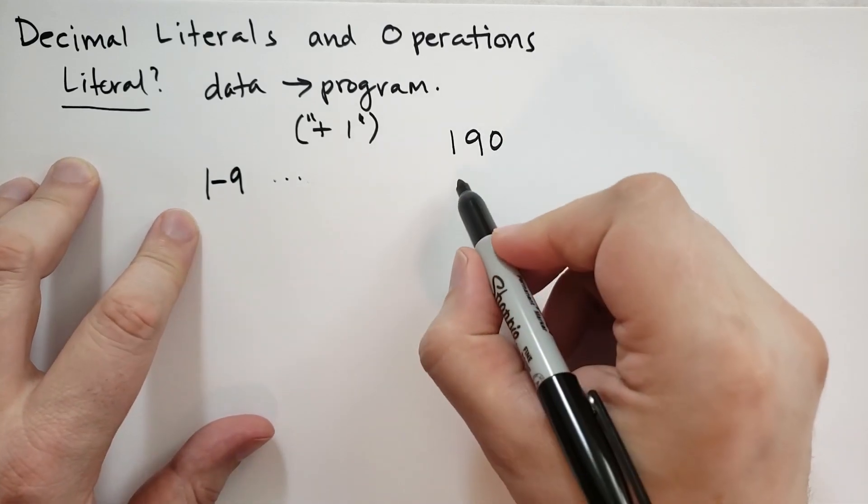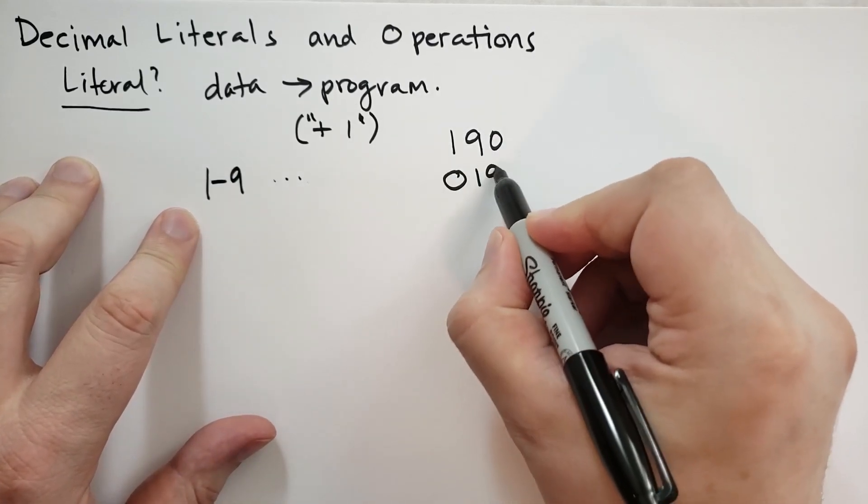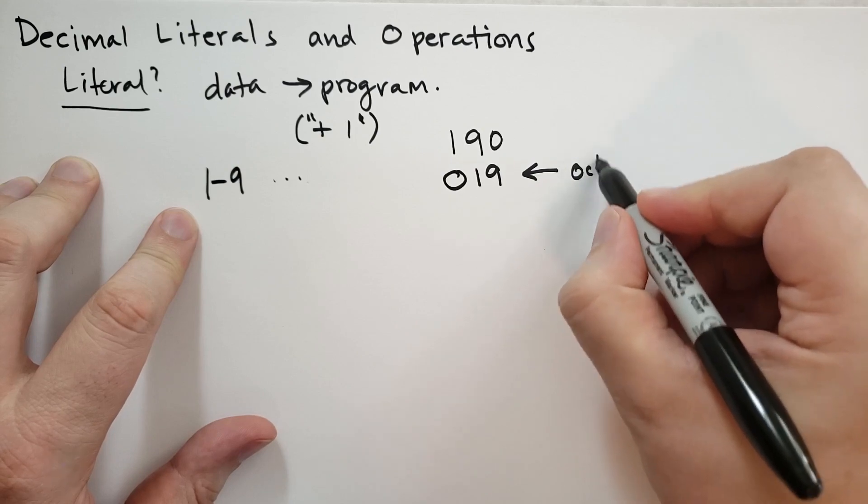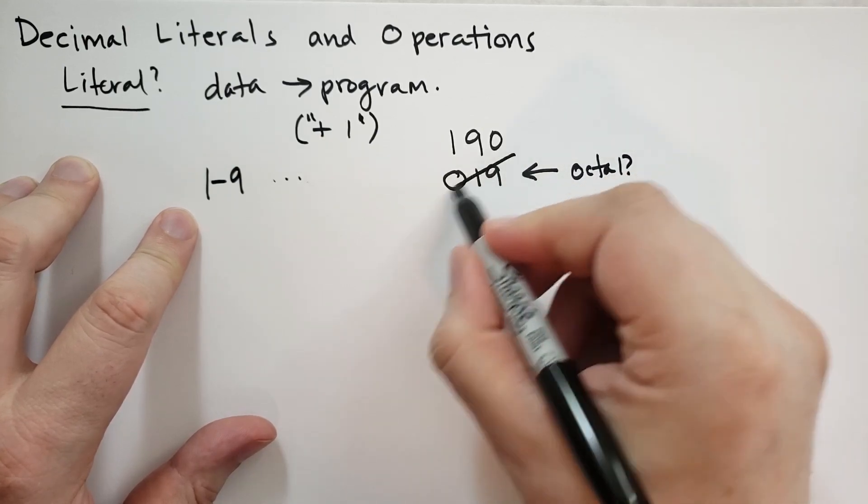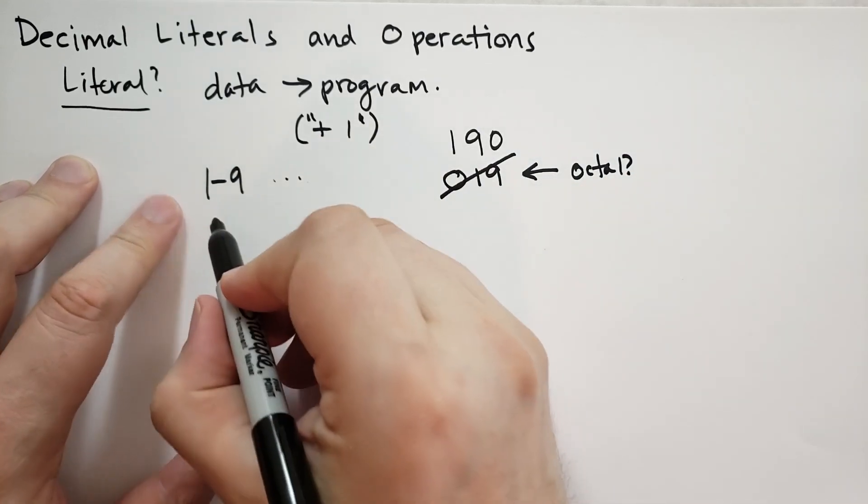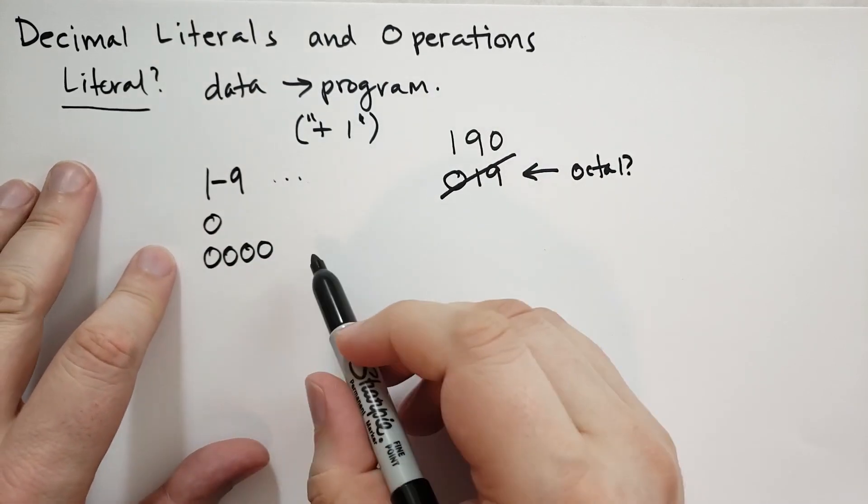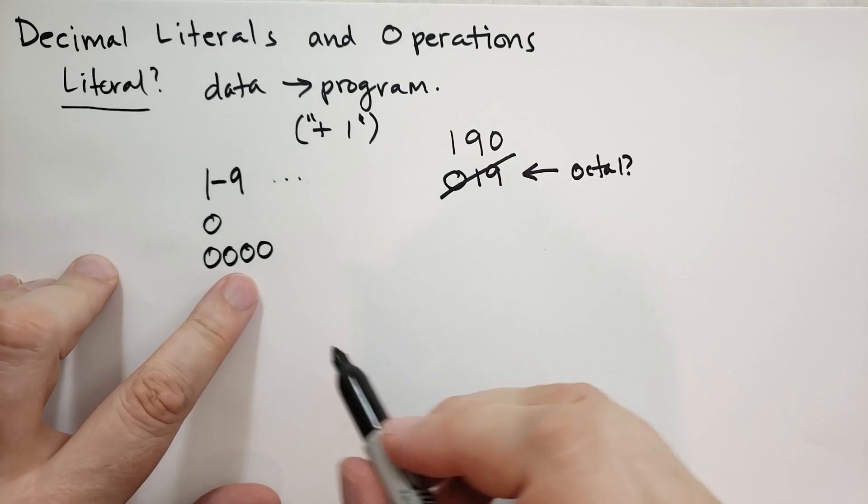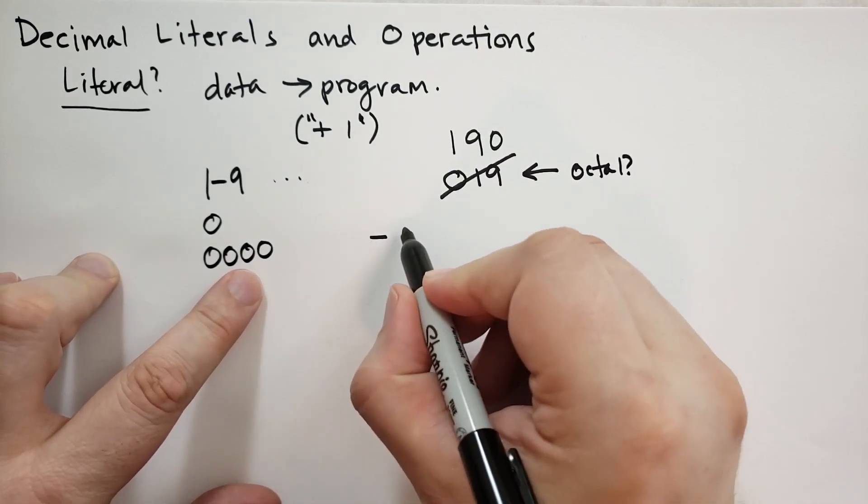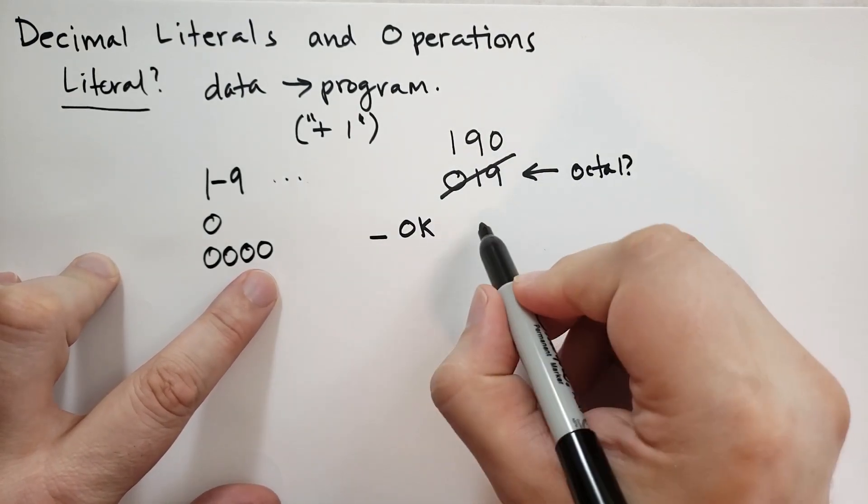And the reason why you can't start with a zero is because of the confusion. In this case, this looks like it could be octal. And so this isn't allowed in Python. Now, you can have zero or any number of zeros. These are all okay. And in Python, you're also allowed to use the underscore to group things together.